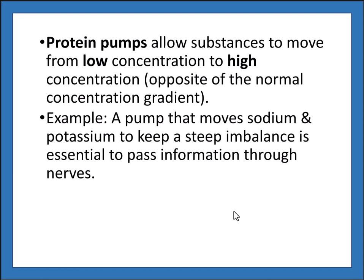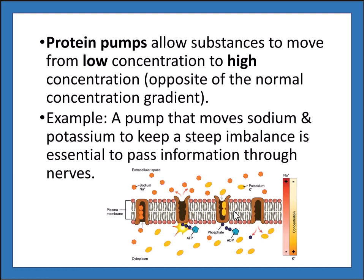An example is a pump that moves sodium and potassium to keep a steep imbalance in nerve cells, allowing nerves to pass information. Nerve cells need a high concentration of sodium outside the cell and high potassium inside. The cell actively pumps sodium out and potassium in to maintain that balance, and this is what allows nerve impulses to pass along your nerves so you can sense things.